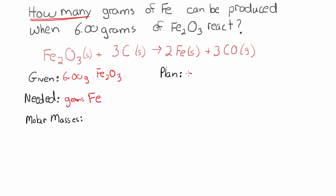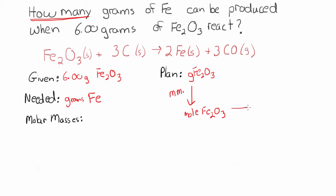Our plan is to go from grams of what's given — grams of Fe₂O₃. We can't go straight from grams of Fe₂O₃ to grams of Fe because we don't have a conversion factor for that. So we actually have to convert to moles first. Then we can use our balanced equation and the mole-to-mole ratio to connect the information. We'll figure out how many moles are in that 6 grams of Fe₂O₃ using the molar mass. Then we'll use our balanced equation and a mole-to-mole ratio.